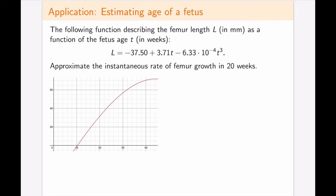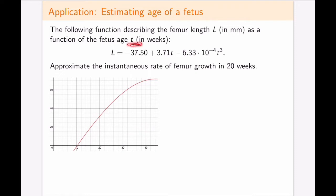Here's the formula for the femur length of a fetus at T weeks — the exact same function we've seen before. We're asked to approximate the instantaneous rate of growth at 20 weeks. There are essentially two ways to do so: first, use the graph directly as an approximation; second, because we have a formula, pick two numbers around week 20 and use the formula to approximate the result.